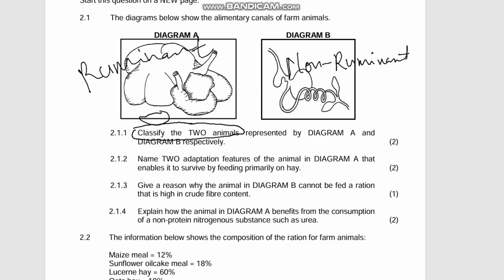Question 2.1.2 says: name two adaptation features of the animal in diagram A that enable it to survive by feeding primarily on hay. The adaptations are: first, it has large fermentation vessels, which allow it to quickly break down and change food particles from one form to another in a short period. Second, the presence of microorganisms in the rumen.